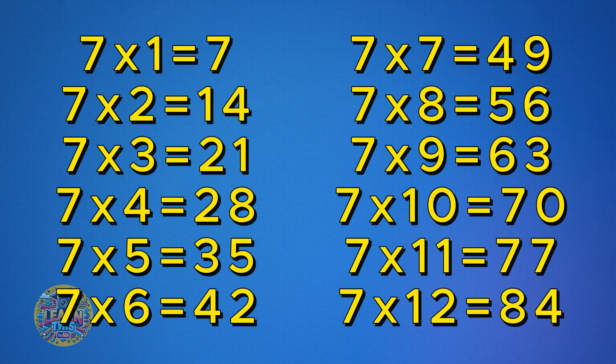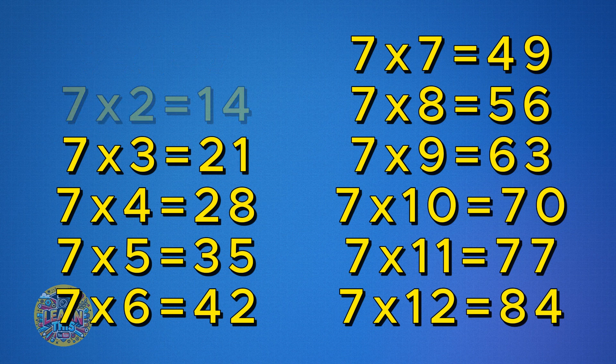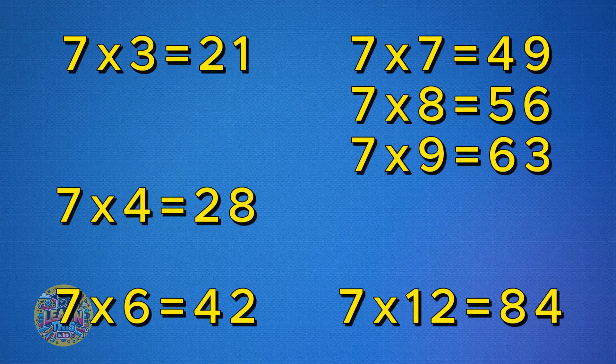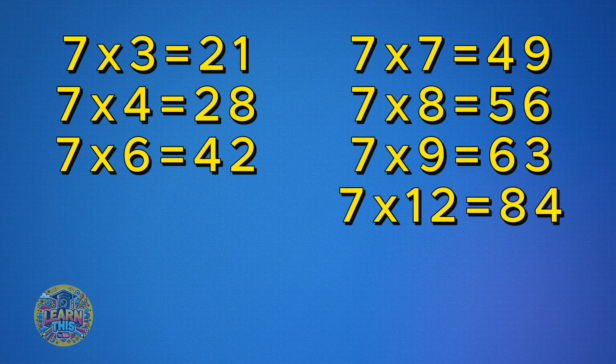Nice work! Now let's make this easier to learn by focusing only on the ones that might take a little extra practice. We'll set aside the easy ones — one, two, five, ten, and eleven. That leaves us with just seven equations to remember: seven times three, four, six, seven, eight, nine, and twelve. Let's focus on just these for now.